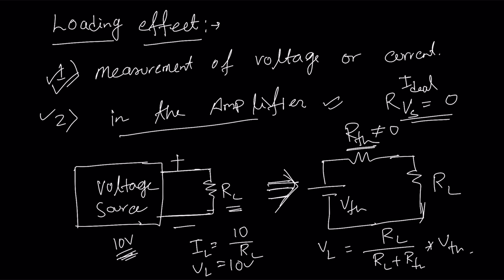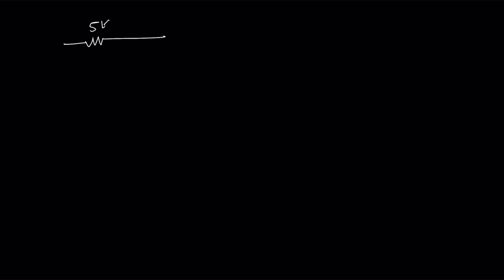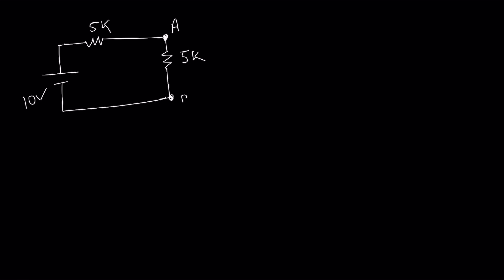Now I go to the measurement of voltage or current. This is very simple. Suppose you have a circuit where this is a 5 kilo-ohm resistance and here also you have a 5 kilo-ohm resistance, with a 10-volt voltage source. When you have the 10-volt voltage source, what will be the voltage at terminal A and B? We will get VAB = (5 / (5 + 5)) × 10 = 5 volts. Just apply the voltage divider rule.